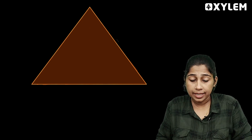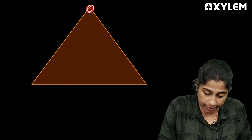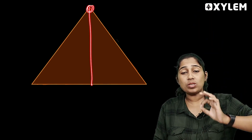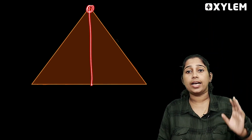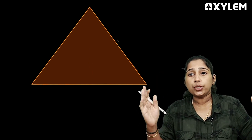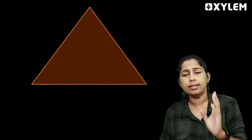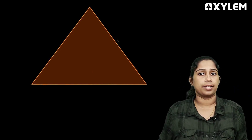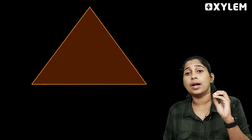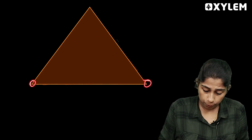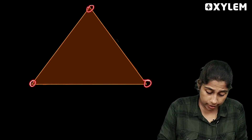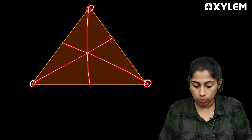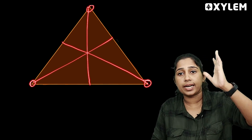A triangle has a vertex and an opposite side. From a vertex to the opposite side — these lines are called Median and Altitude. Where is the vertex? Where is the opposite side?